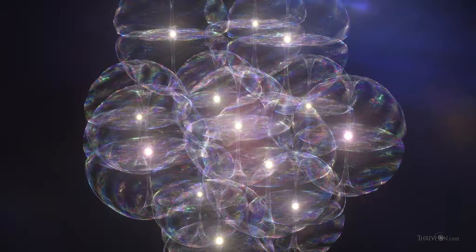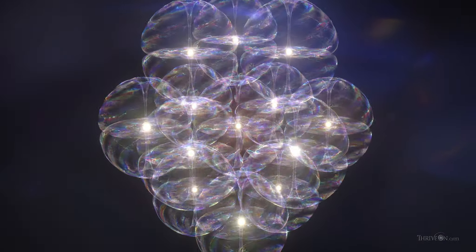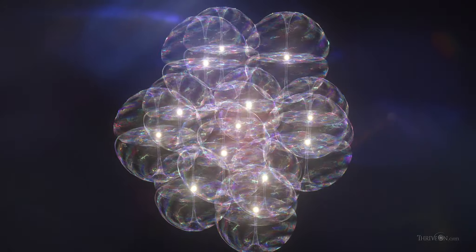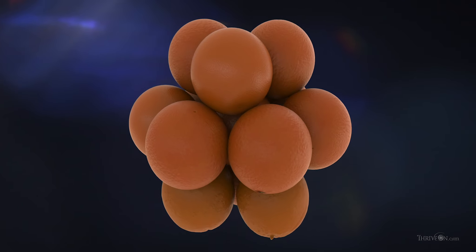The field is basically a sea of toruses, each one touching its 12 identical neighbors, like a stack of oranges.